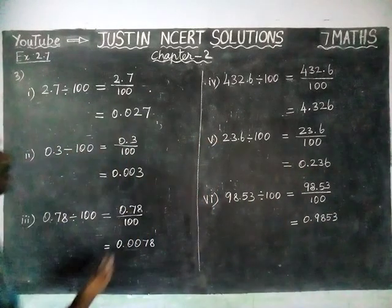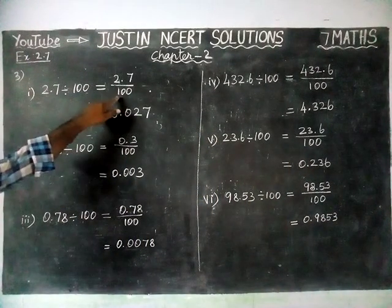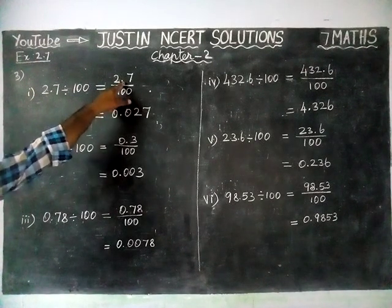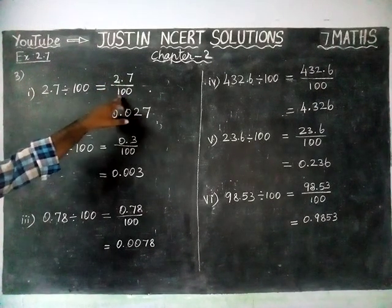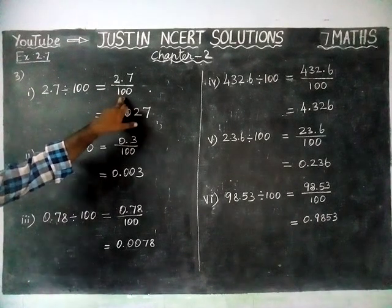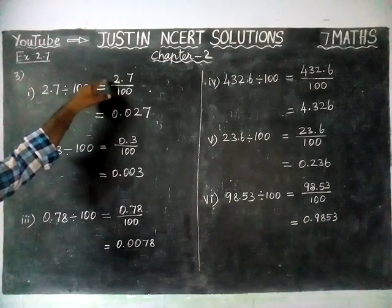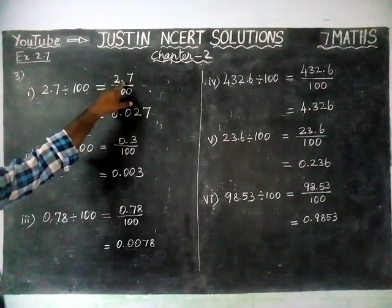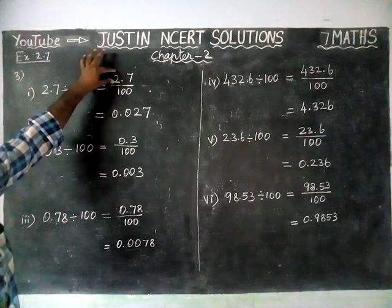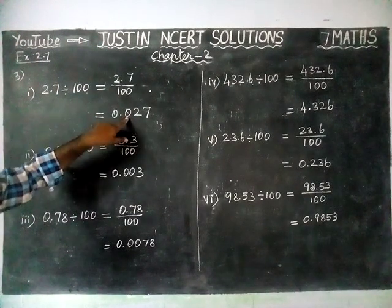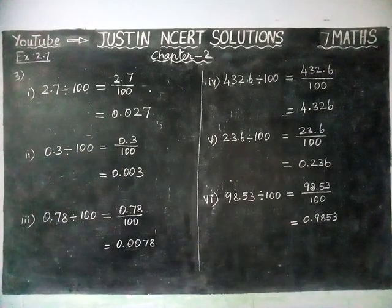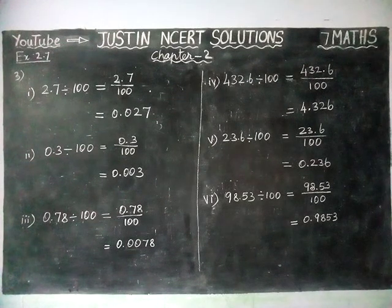To recall the concept: according to the number of zeros in the denominator, we have to move that many decimal places to the left-hand side. If we have two zeros, we move two decimal points left. For 2.7, which has only one decimal place, we move two steps left and add a zero as needed. Kindly give your suggestions in the comments box, share it with your friends, and subscribe to our channel. Thank you.